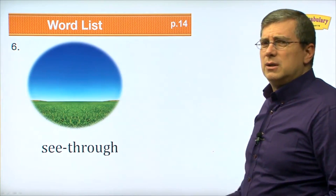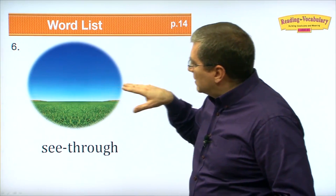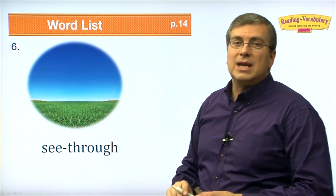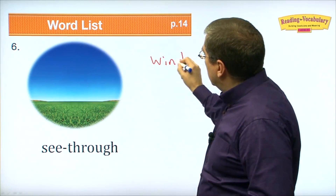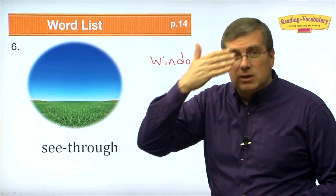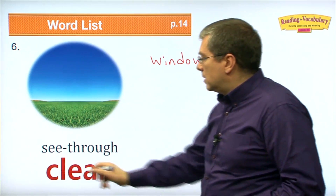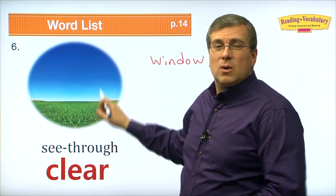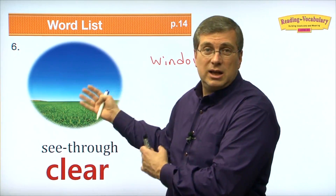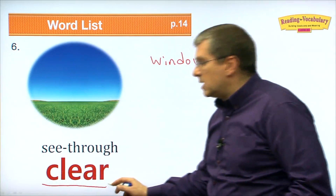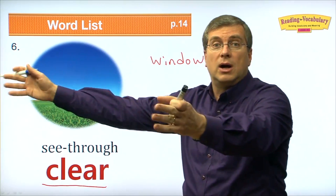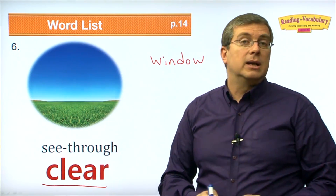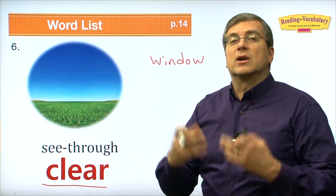Number six: see-through. To see-through means you can see through something very easily. You can see through air very easily, and you can see through a window. But you can't see through a window if it's dirty or not clear. If it's a cloudy day or there's smoke or dust in the air, it's not clear. But something that you can see through — whether it's glass, air, or water — is clear.